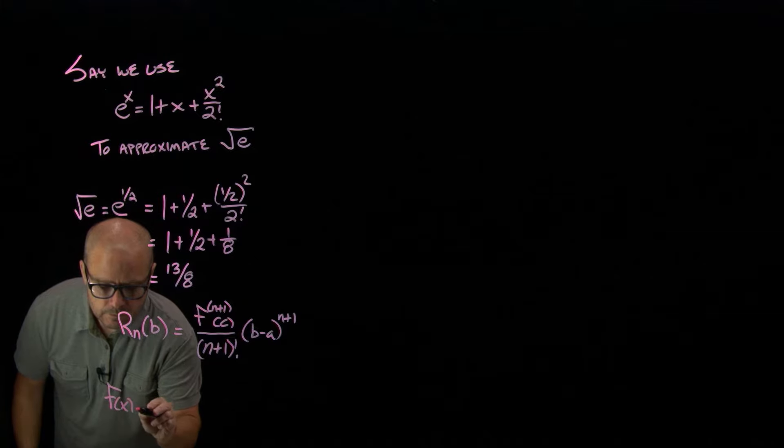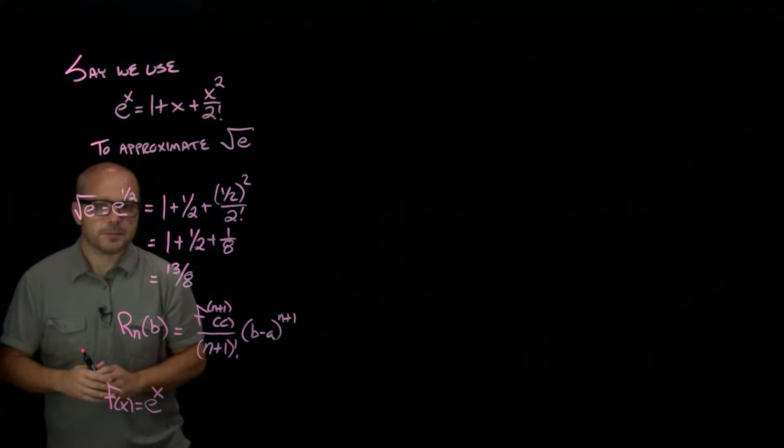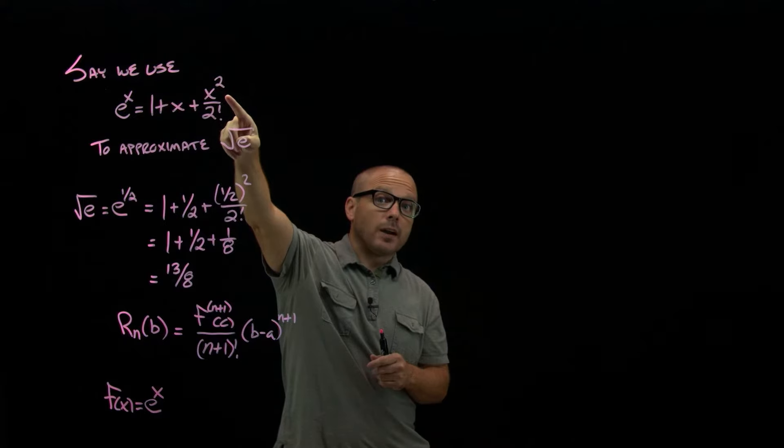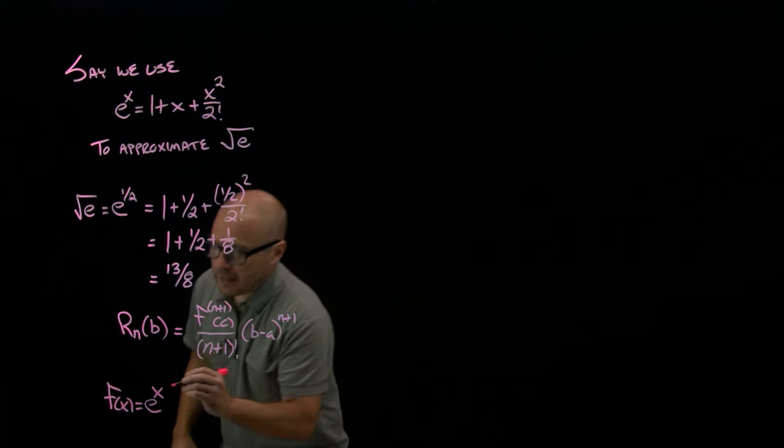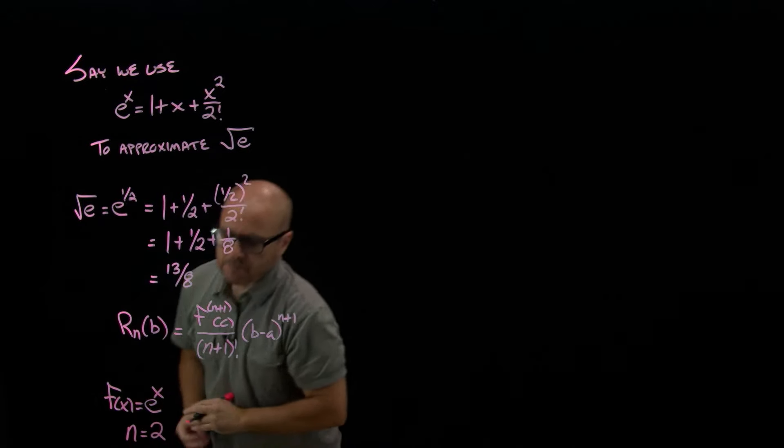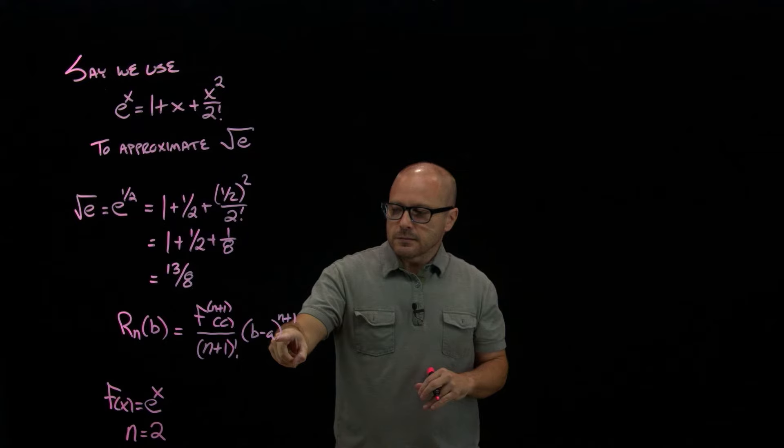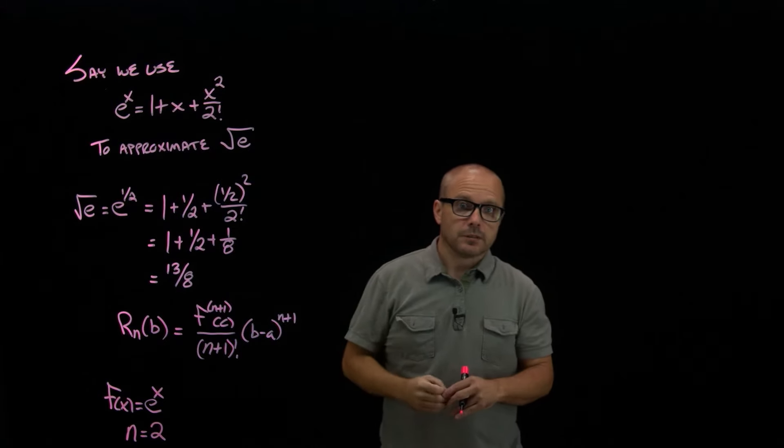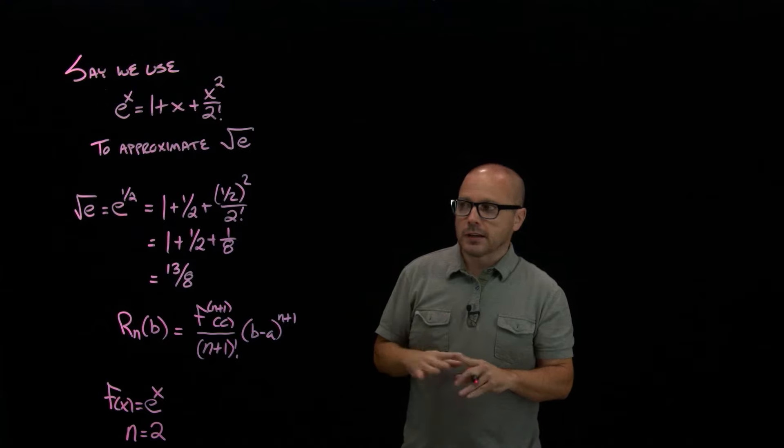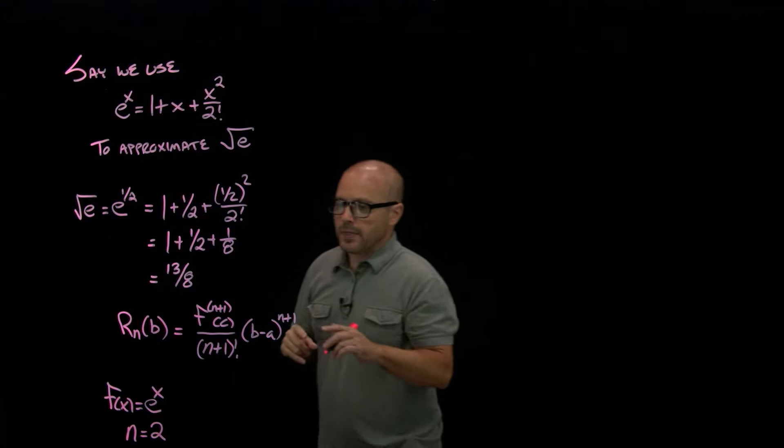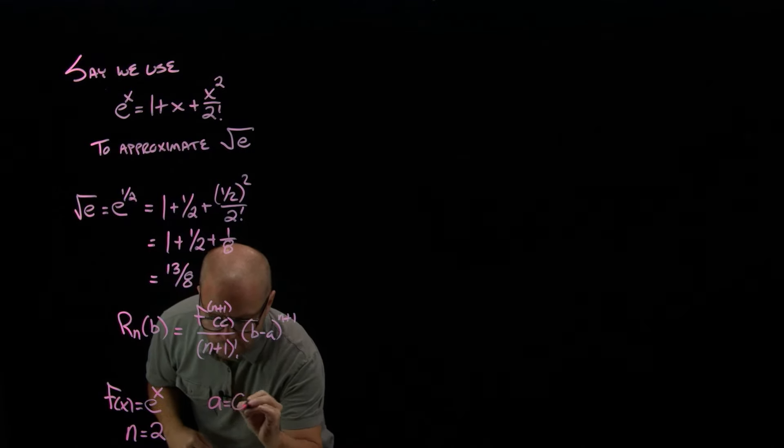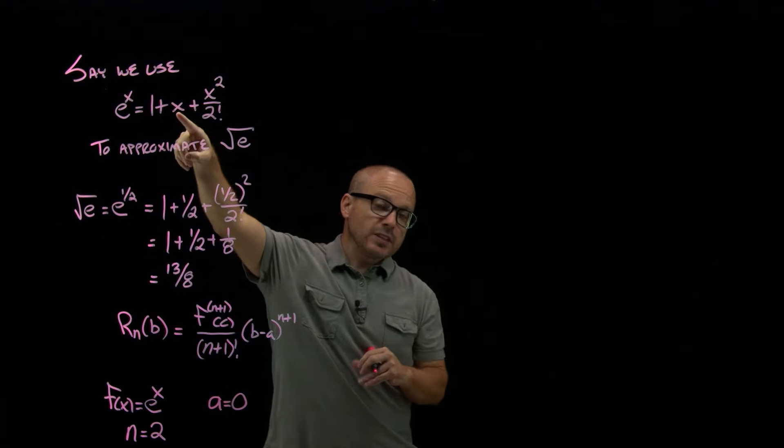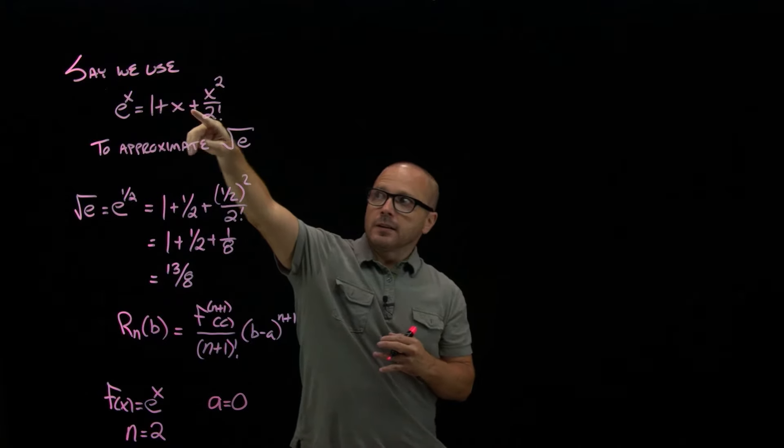So let's just list all this stuff out so we're clear. The function, e to the x. In this, n represents which order Taylor polynomial you're using. We're going up to x squared. So this is second order. So n, in this case, is 2. A is where we centered e to the x when we created that Taylor series in the first place. So when we derived the Taylor series for e to the x, sine x, cosine x, all of those were centered at 0. That's what that a is. So remember, in a Taylor series, you have to center it somewhere. x minus a, x minus a squared. The a, in this case, was 0.